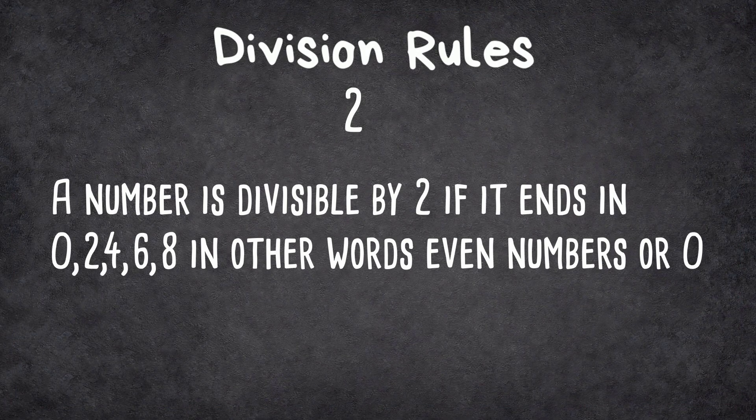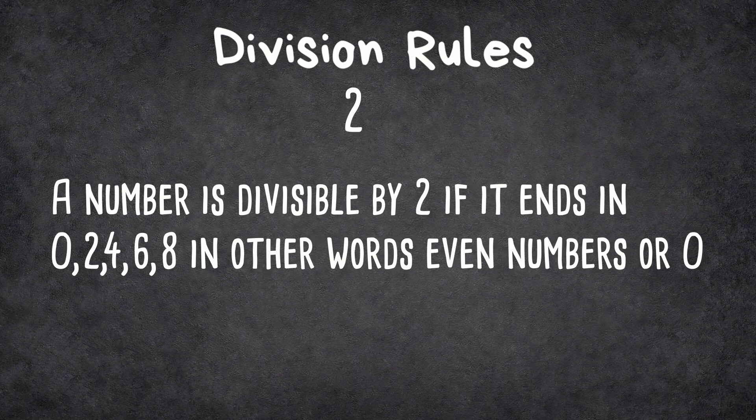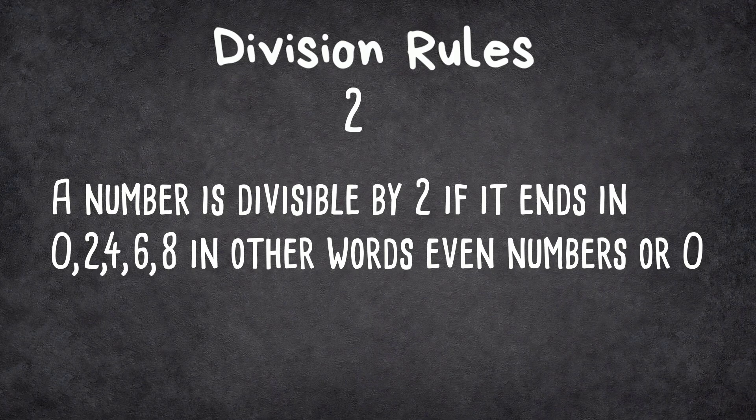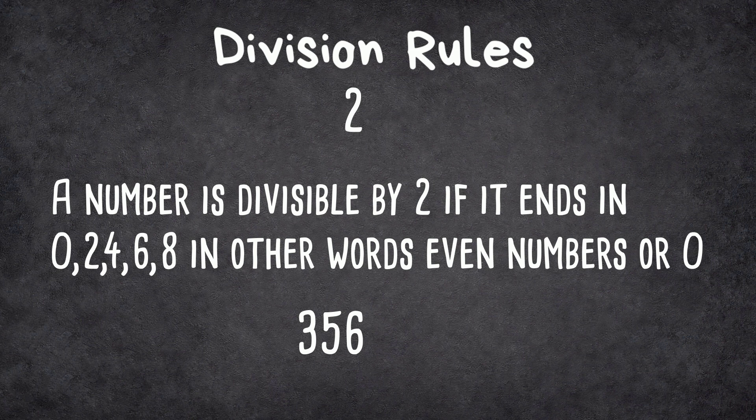A number is divisible by 2 if it ends in 0, 2, 4, 6, or 8. In other words, all even numbers. For example, 356 ends in 6, so it will be divisible by 2.